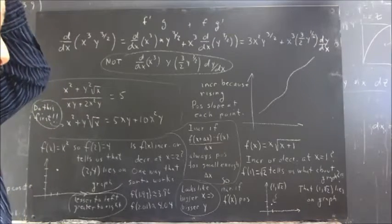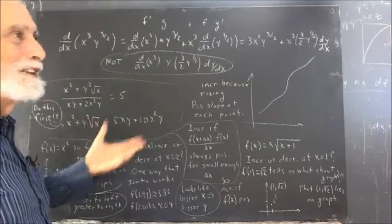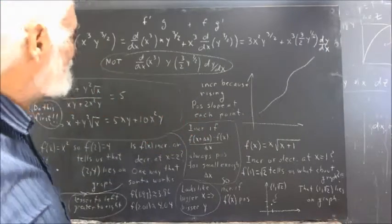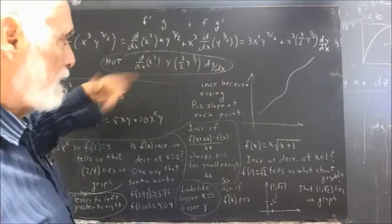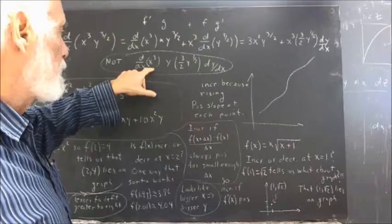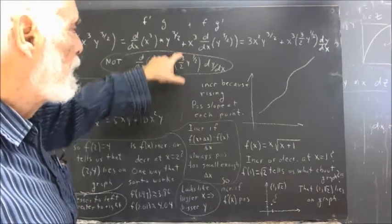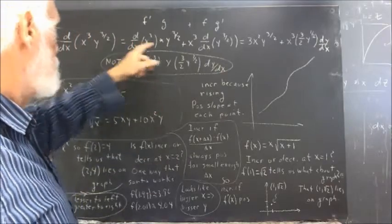Now, I saw some pretty imaginative, to put it kindly, results on doing this kind of derivative. I saw something that looked something like this. A derivative with respect to x of x cubed times y times 3 halves y to the 1 half dy dx. No plus.